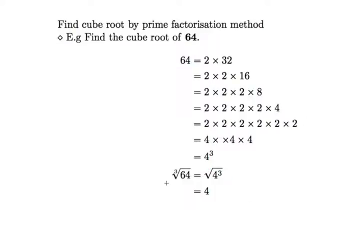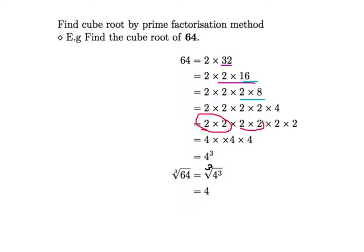Let's do an example: cube root of 64 by prime factorization. Break 64 down: 64 → 32 → 16 → and so on until you have all prime factors. Group the prime factors in threes: you get three groups of 2 twos. Taking one from each group gives 2 × 2 = 4. So the cube root of 64 is 4.